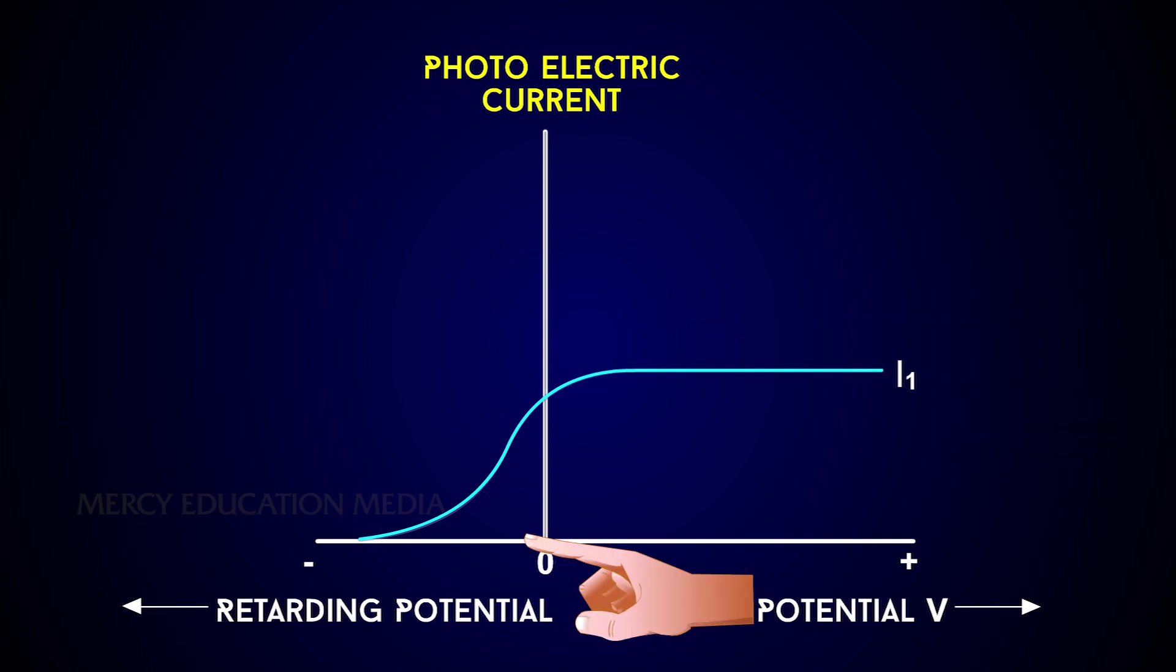If the potential of the plate A is made negative, the photocurrent does not immediately drop to zero but flows in the same direction as for positive potential.